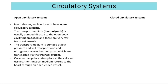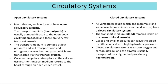In an open circulatory system the transport medium is pumped at low pressure and transports food and nitrogenous waste but not gases — those are transported via the tracheal system. Once exchange has taken place the transport medium returns to the heart through an open-ended vessel. In contrast, a closed circulatory system, seen in all vertebrates and some invertebrates such as annelid worms, keeps blood always inside blood vessels. Gas and small molecules can leave the blood by diffusion or due to high hydrostatic pressure.